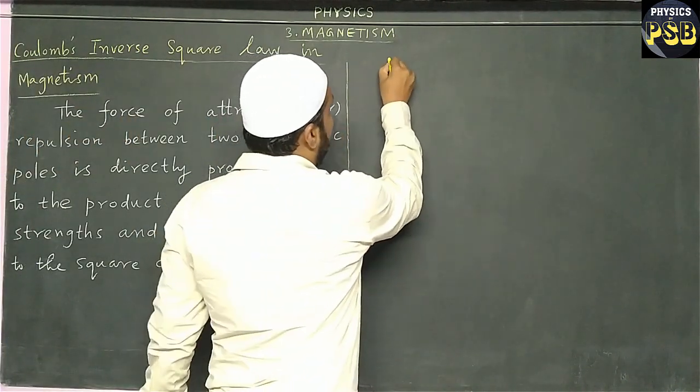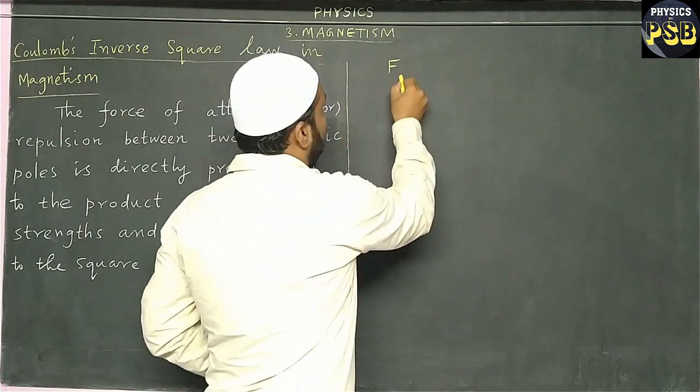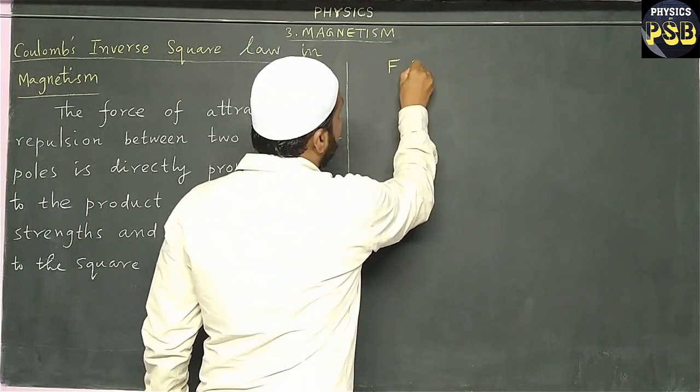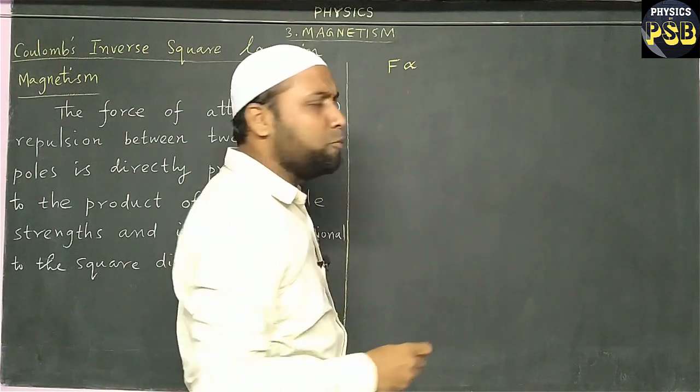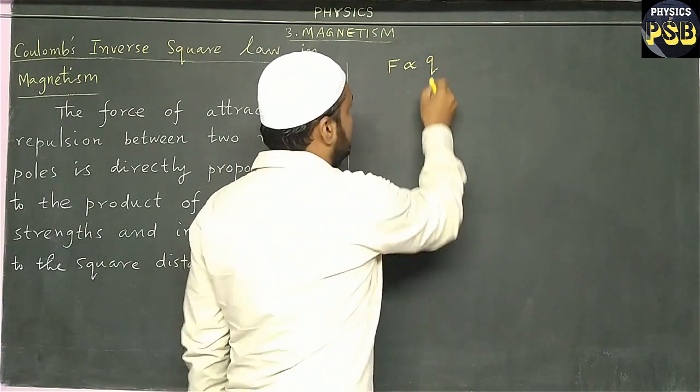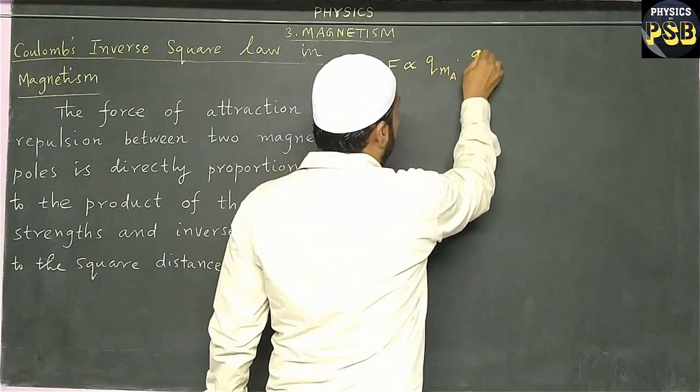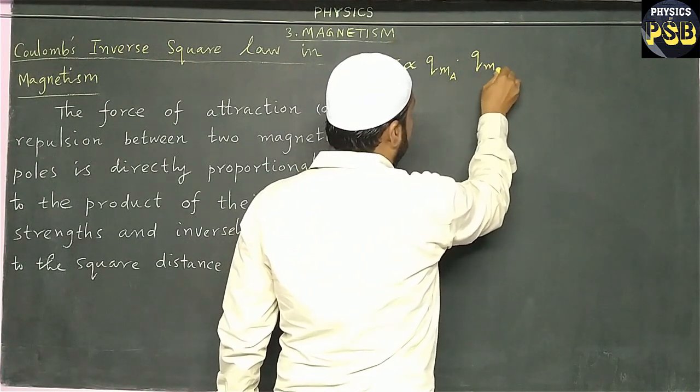Mathematically, we can write it in this manner. Here, F is the force of attraction or repulsion between the poles, which is directly proportional to the product of magnetic pole strength. That is q_m,a and q_m,b.